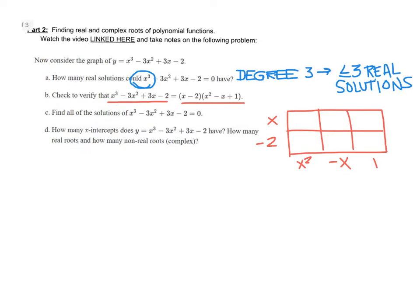And so let's just go ahead and multiply. I'm going to multiply across the top row first. x times x squared is x cubed. x times negative x is negative x squared. x times 1 is x. And then across the bottom row, negative 2x squared. A negative times a negative is positive, so positive 2x. And then negative 2 times 1 is a negative 2.